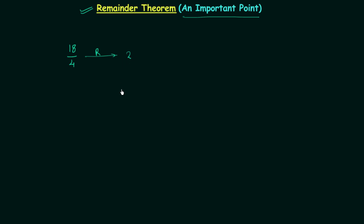So the remainder is simply equal to 2. But you can see 18 is a multiple of 2 and 4 is also a multiple of 2, so we can simplify this division further. We have 9 divided by 2 as the simplified division, and the remainder in this case is equal to 1, because 2 fours are 8 and 9 minus 8 is equal to 1.